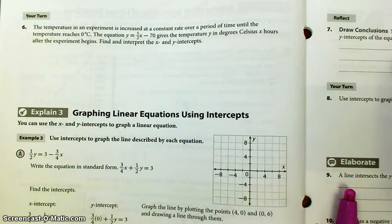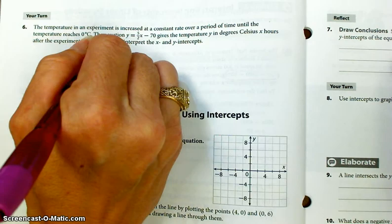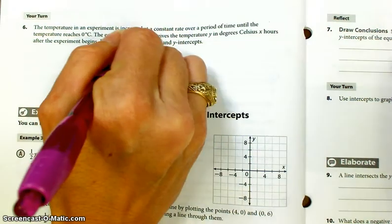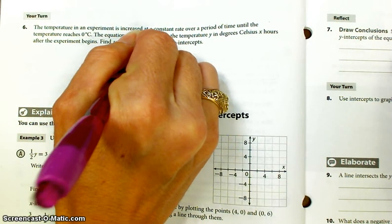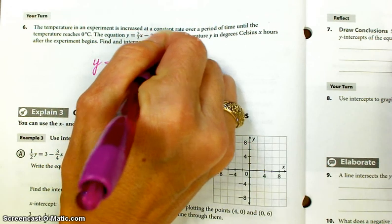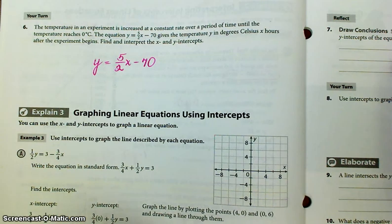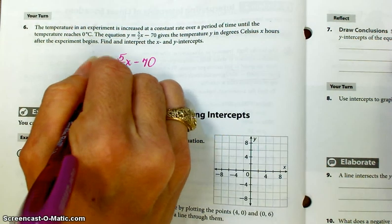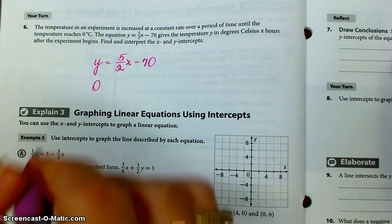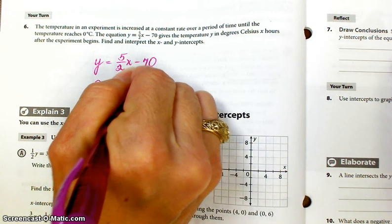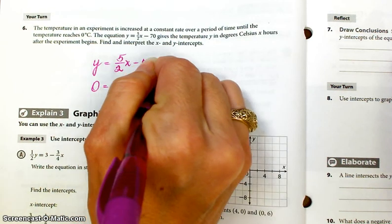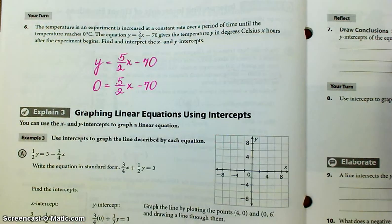And here is my equation. So, when the temperature is 0, that's a y-value, I can solve for x and get the x-intercept.